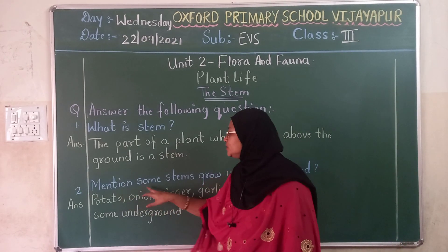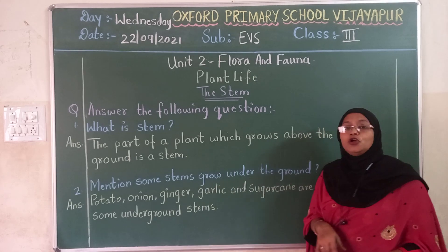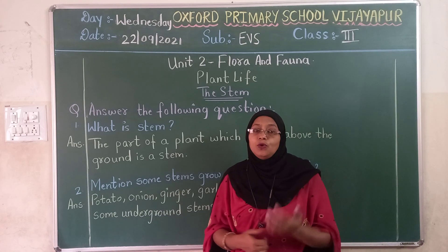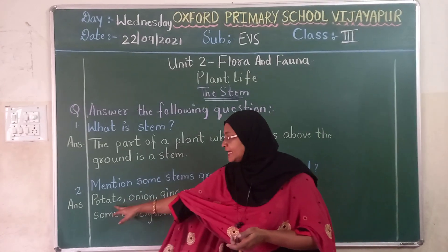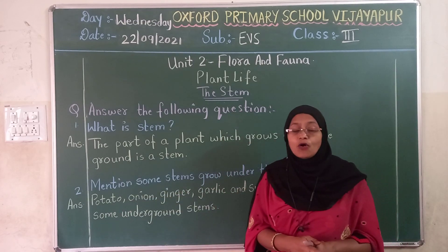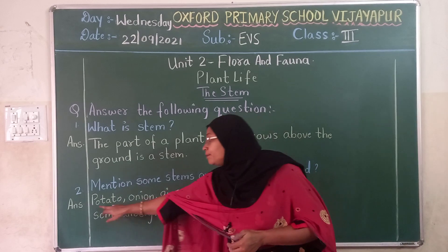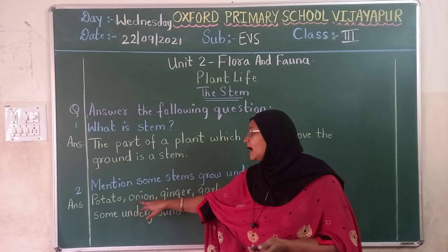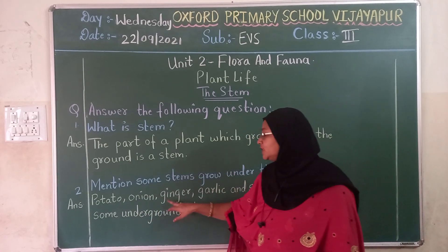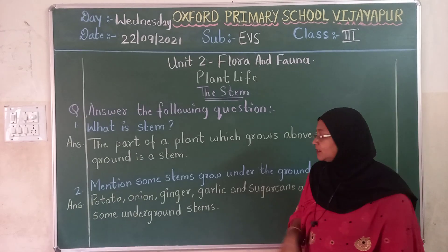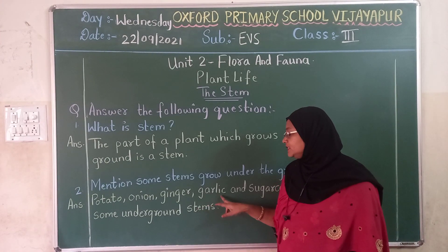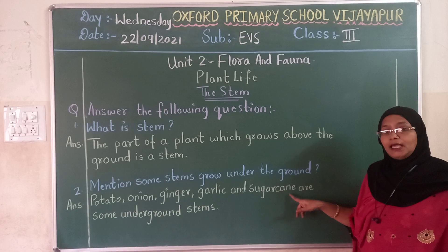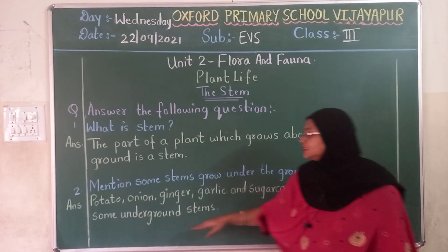Second question: mention some stems that grow underground. So which were those stems yesterday that we have already drawn? So now you understand — potato. See, many of your writings spell potato wrong: P-A-T-O-T-O — that is wrong. Potato: P-O-T-A-T-O. Onion: O-N-I-O-N. Ginger: G-I-N-G-E-R. Garlic: G-A-R-L-I-C. And sugar cane: S-U-G-A-R C-A-N-E. They are some underground stems.